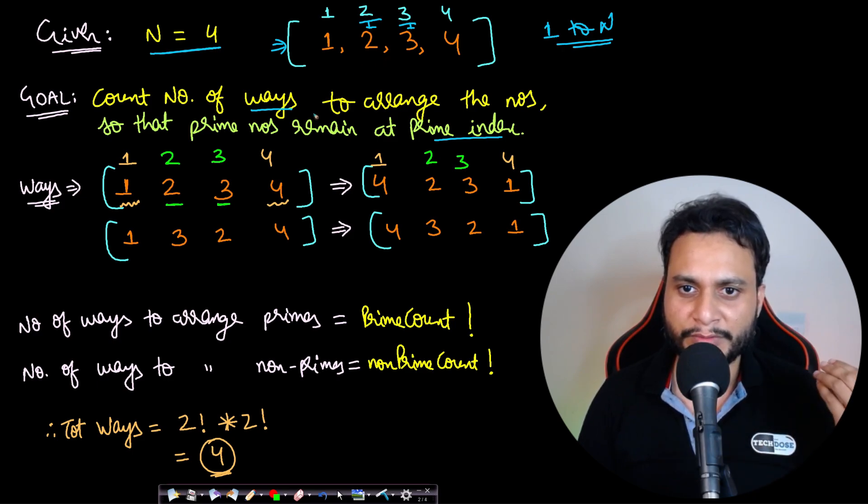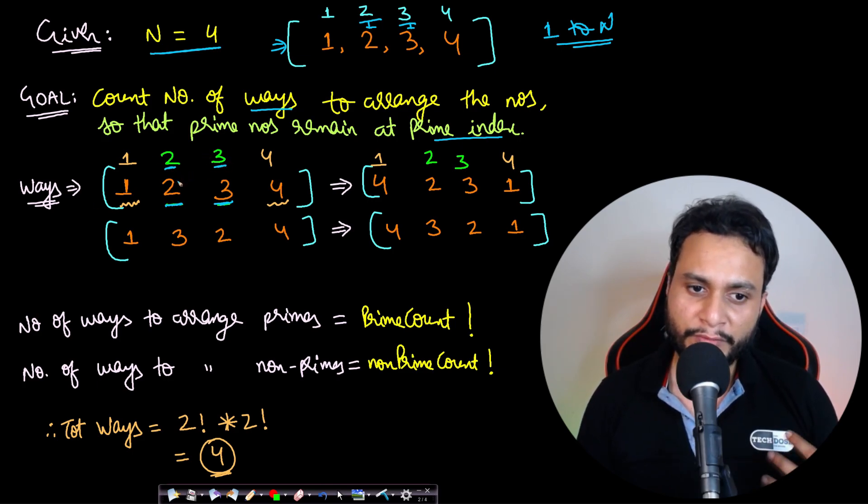You have to arrange the primes as well as non-primes to find how many different unique lists you can get. If you get [1, 2, 3, 4], this is one arrangement because initially all numbers and indices are the same, so all prime numbers are at prime indices. 2 and 3 are at index 2 and 3, which are prime, so this is one possible arrangement.